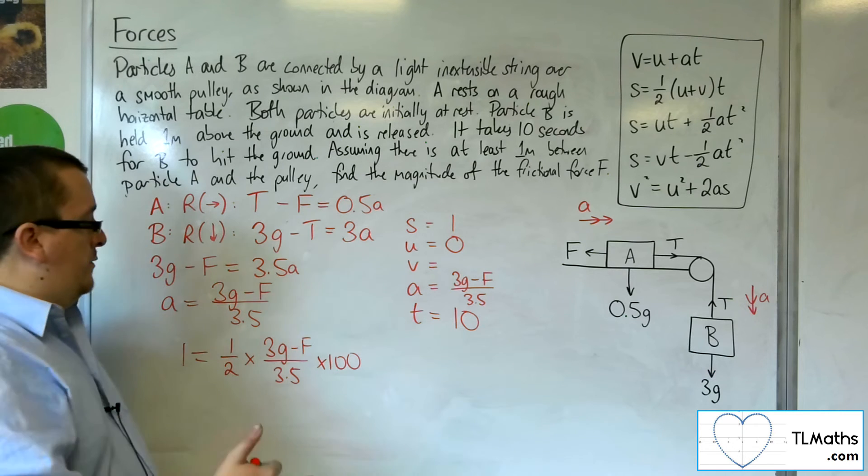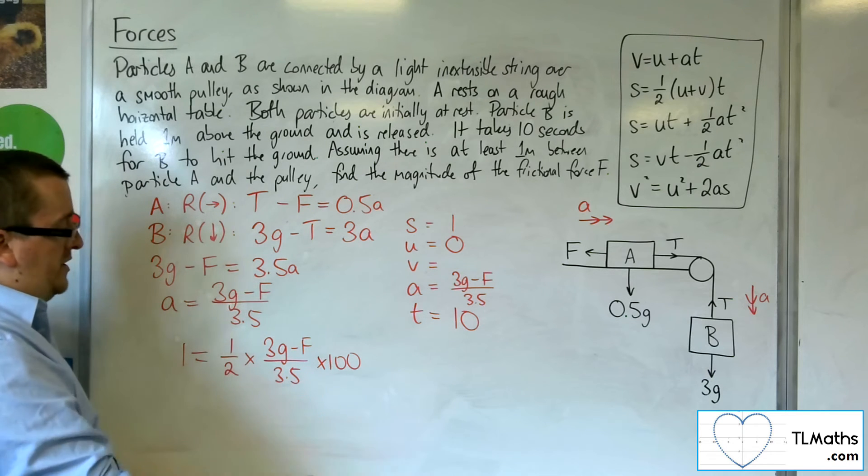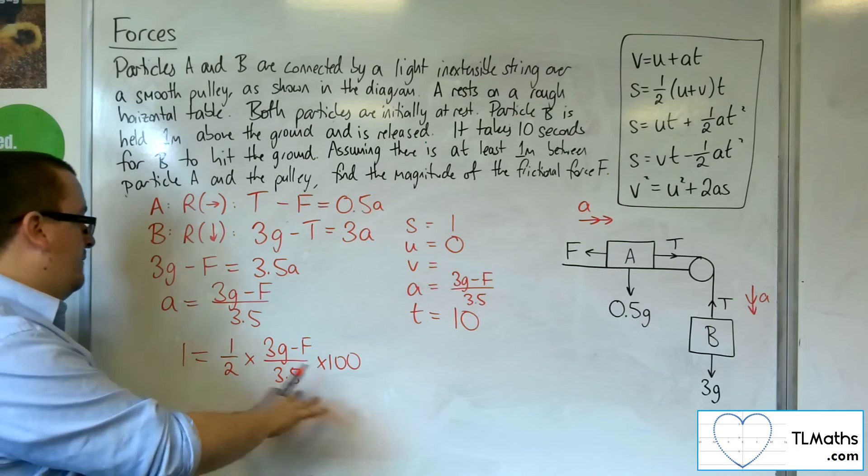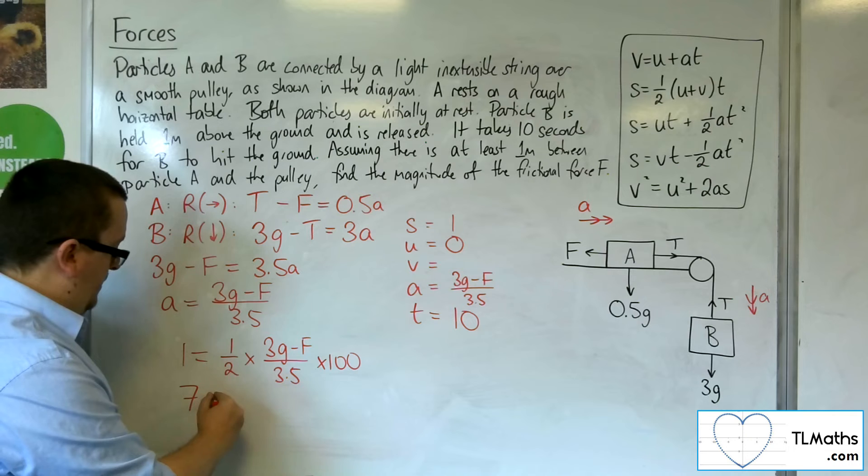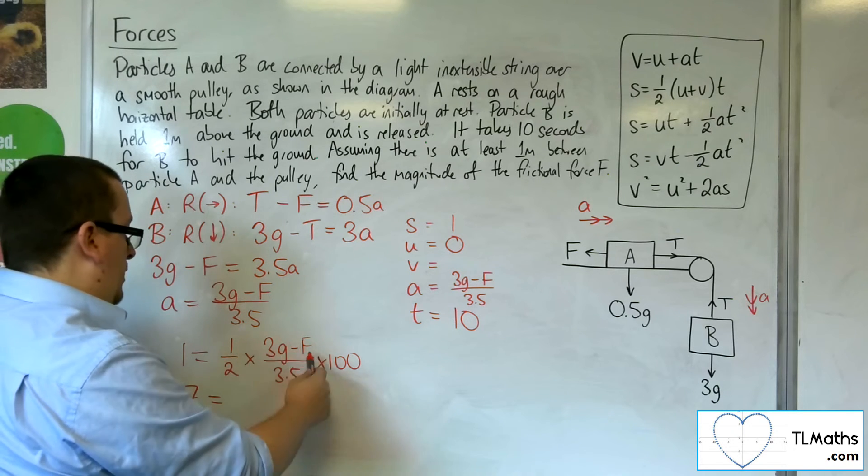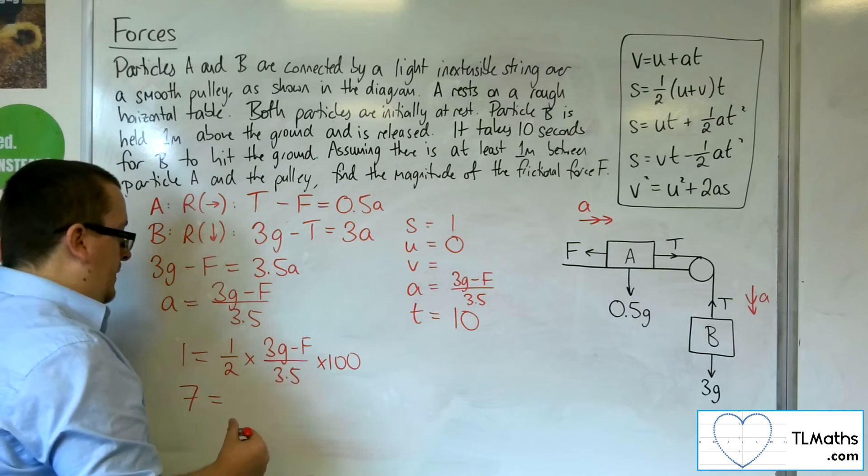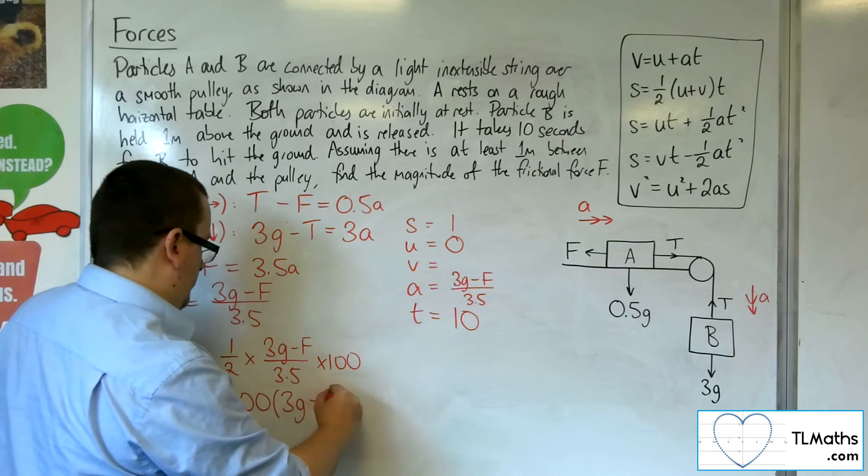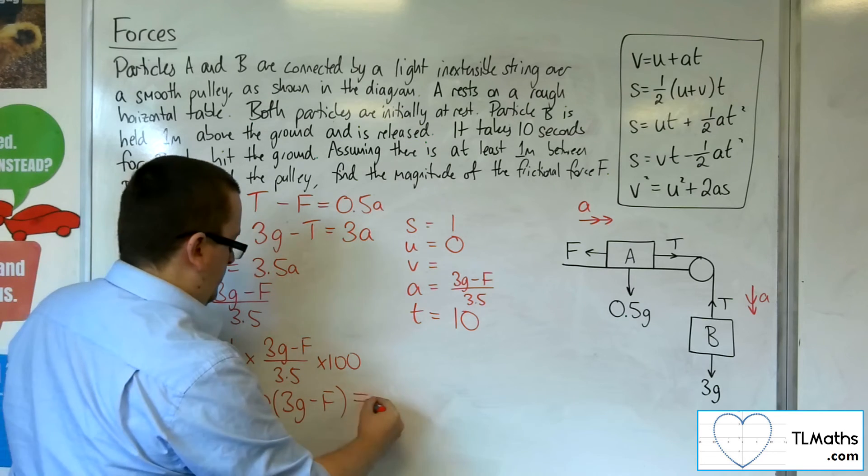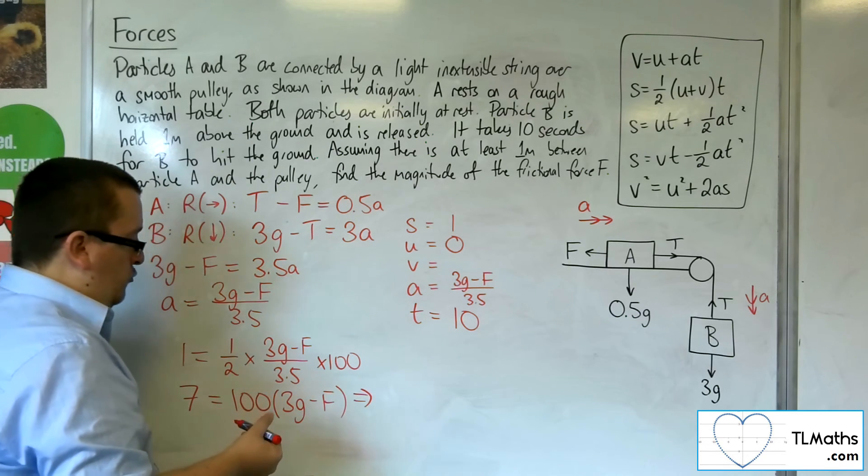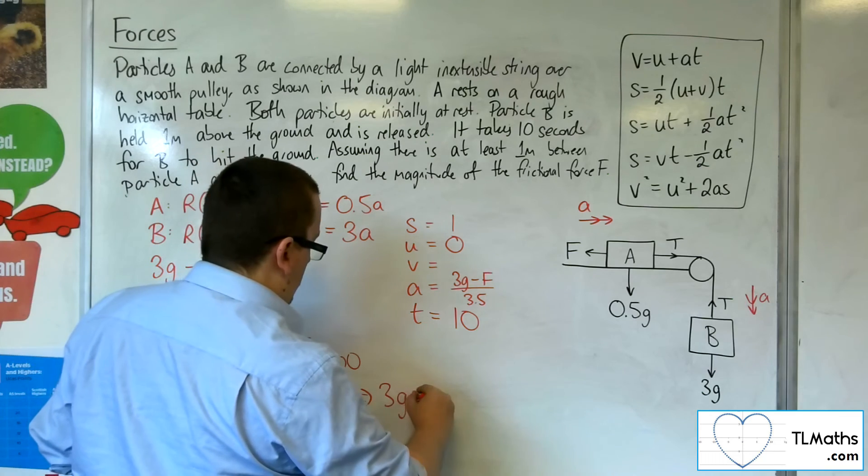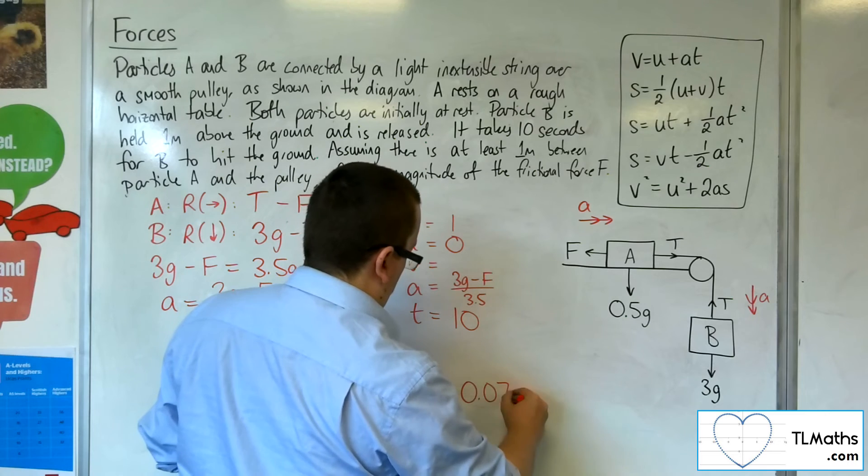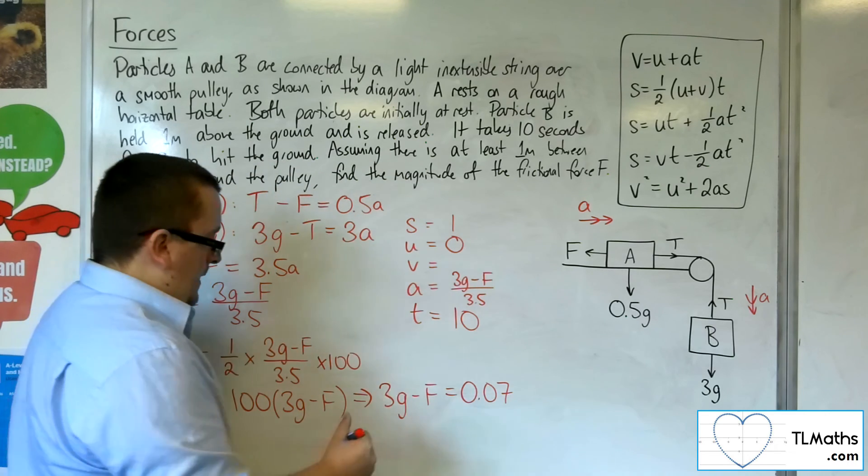So, I now have an equation with just the one unknown, the F. Remember, the G I'm going to take as 9.8. So, let's multiply everything by 2 and 3.5. So, multiply everything by 7. So, we get 7 is 100 lots of 3G minus F. I can divide both sides by 100. So, 3G minus F is going to be 0.07.